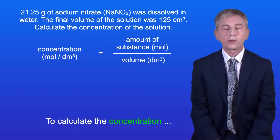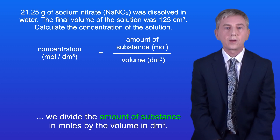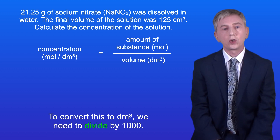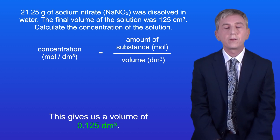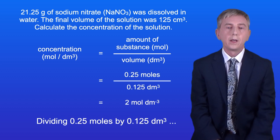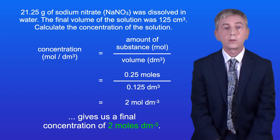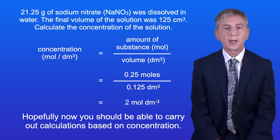To calculate the concentration we divide the amount of substance in moles by the volume in decimetres cubed. In this question the volume is given in centimetres cubed, so to convert to decimetres cubed we divide by 1000, giving us 0.125 decimetres cubed. Dividing 0.25 moles by 0.125 decimetres cubed gives us a final concentration of 2 moles per decimetre cubed. Hopefully now you should be able to carry out calculations based on concentration.